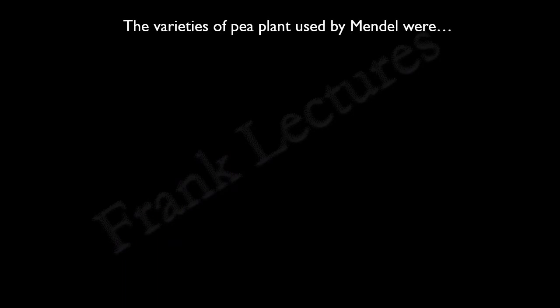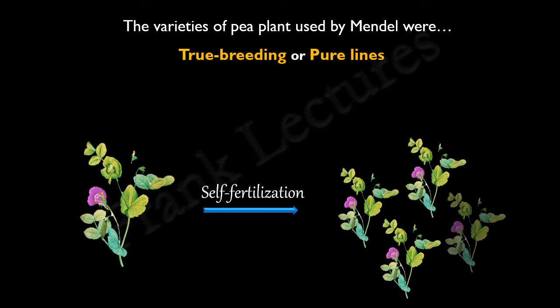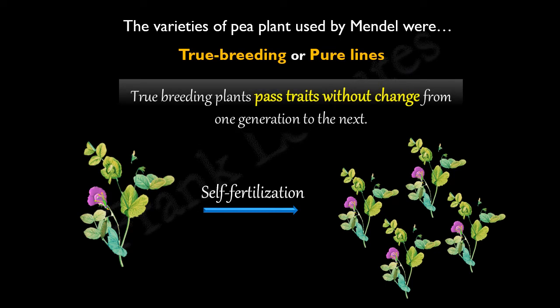The varieties of pea plant used by Mendel were true breeding or pure lines. What is meant by true breeding or pure lines? Suppose this is a pea plant producing purple flowers. When it is self-fertilized, the next generation of pea plants also produces purple flowers. The varieties of a plant producing offspring with traits identical to the parent on self-fertilization are known as true breeding or pure lines. What we need to note is that true breeding plants pass traits without change from one generation to the next.